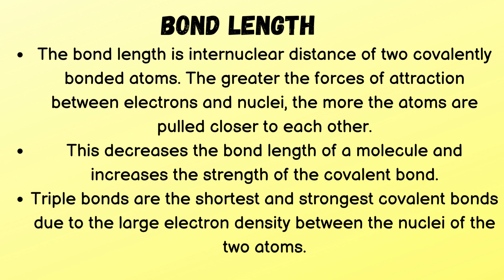Bond length is the internuclear distance of two covalently bonded atoms. The greater the forces of attraction between electrons and nuclei, the more the atoms are pulled closer together, decreasing the bond length and increasing the strength of the covalent bond. Triple bonds are the shortest and strongest covalent bonds due to the large electron density between the nuclei of the two atoms.